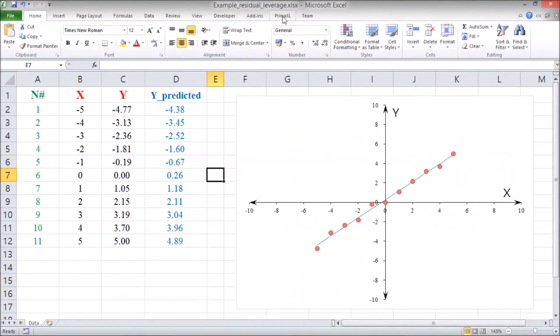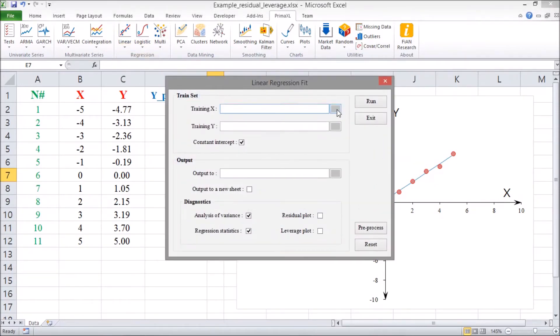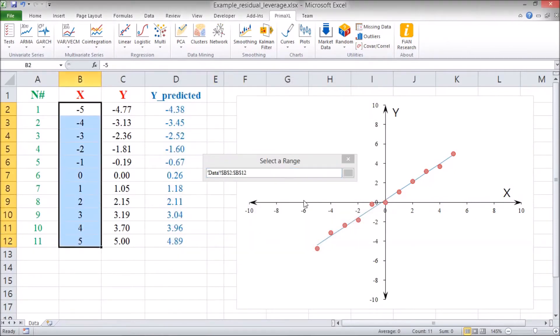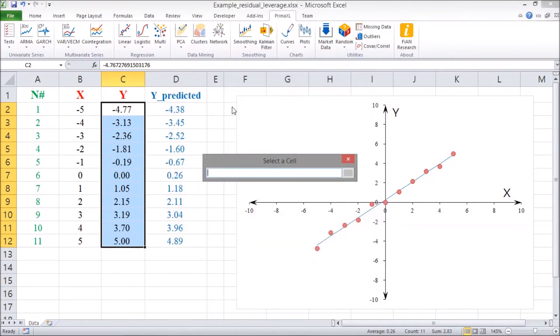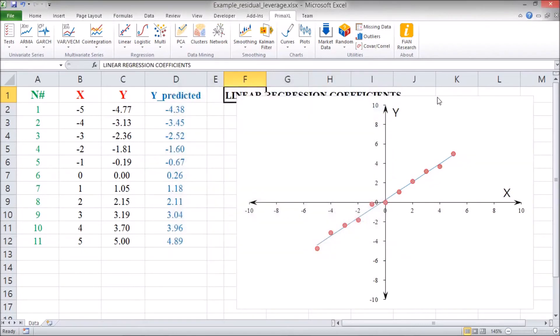We go back to the PrimExcel tab, select Linear, and then Fit. We select the cell ranges for x and y. And then, we specify the output location. Now, your attention please. We deselect these two boxes and select these two that allow for the output of the residuals and leverages. Finally, we press the Run button to execute.